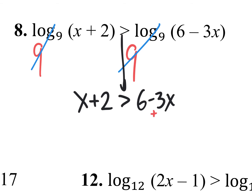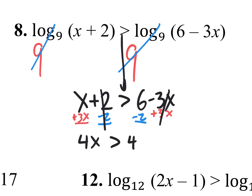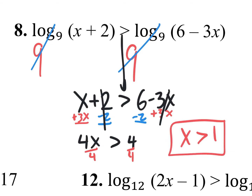Let's continue solving. We add 3x and subtract 2 from both sides. 3x plus 1x is 4x, and 6 minus 2 is 4, giving us 4x greater than 4. Divide both sides by 4 — we did not divide by a negative — so it is x is greater than 1. A lot of us will do this correct work, see that multiple choice answer, select it, hit enter, and it's going to be wrong.